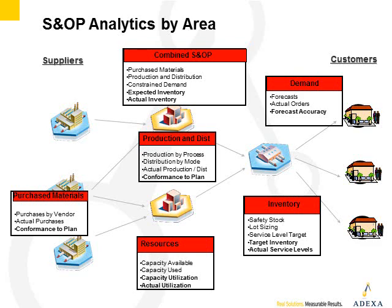First, on the right, we have the demand side. Demand is very traditional in terms of the analytics there — it deals with forecasts, actual orders to date, forecast accuracy, and things like that. These are the kinds of measures that you typically find in your demand planning process.